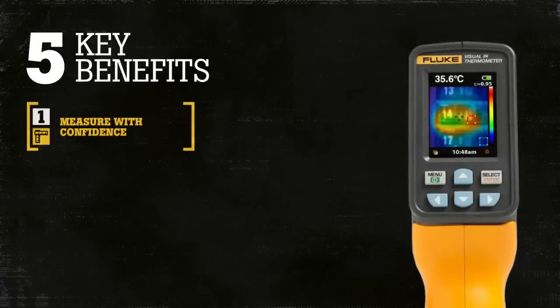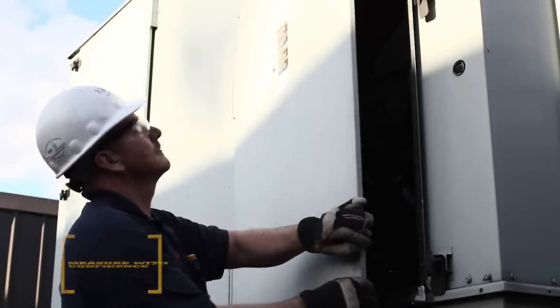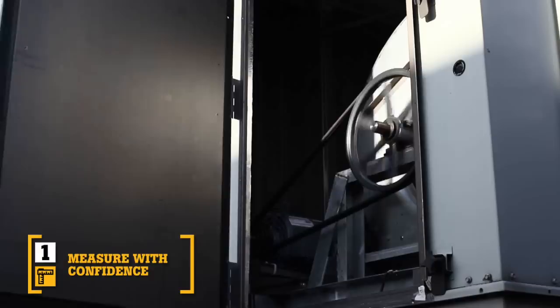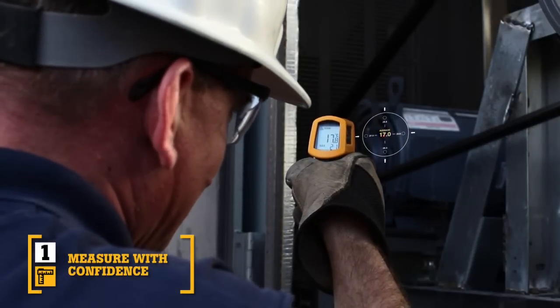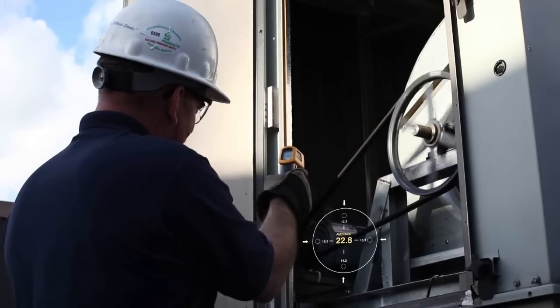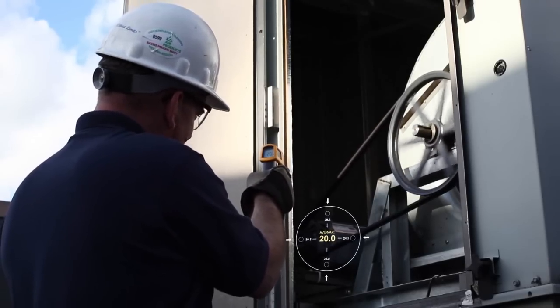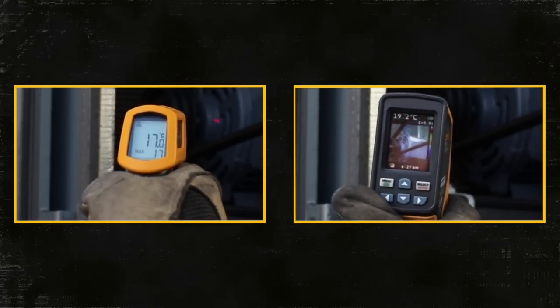There are five key benefits of the VT02 over other temperature measurement devices. First, traditional infrared thermometers only measure an average temperature of an area, not just the temperature at the laser indicator. Also, the further you are away from an object, the less accurate you are. The VT02 lets you see the visual image of exactly what you are measuring.